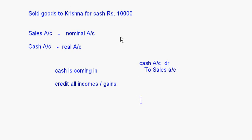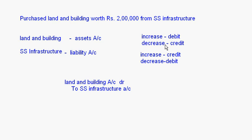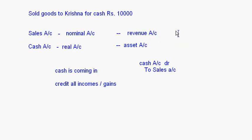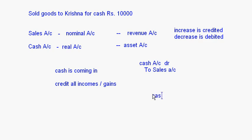If I follow the modern approach, then sales is a revenue account and cash is an asset account. The rule for asset account: increase is debited, decrease is credited. For revenue account: increase is credited, decrease is debited. Cash account is increasing — cash is coming in — so cash account will be debited. Sales account is also increasing: initially the amount of sales was 0, now it is 10,000 rupees — increased by 10,000. So sales account is increasing, and that will also get credited to sales account. In both approaches, the result is the same.